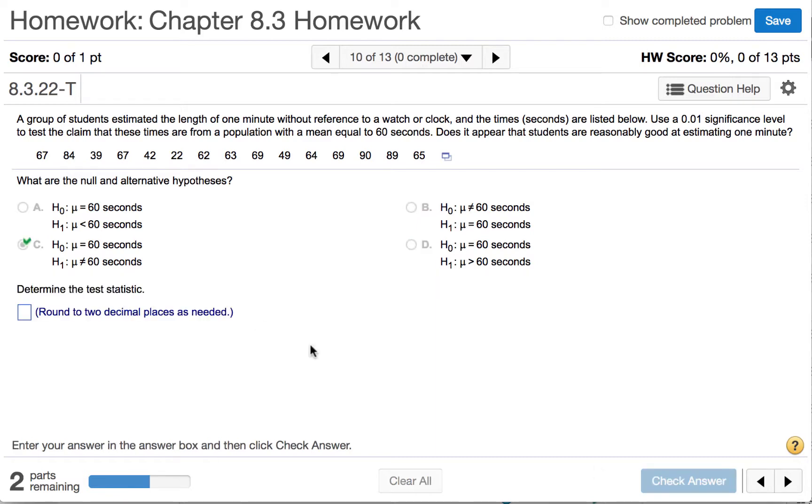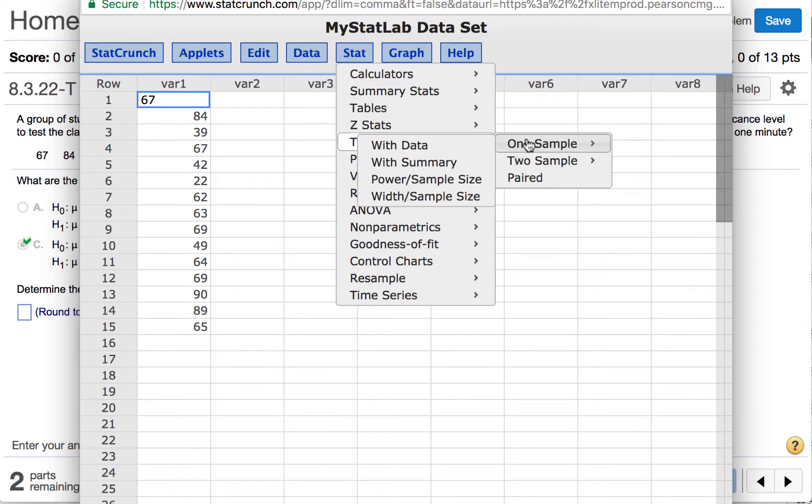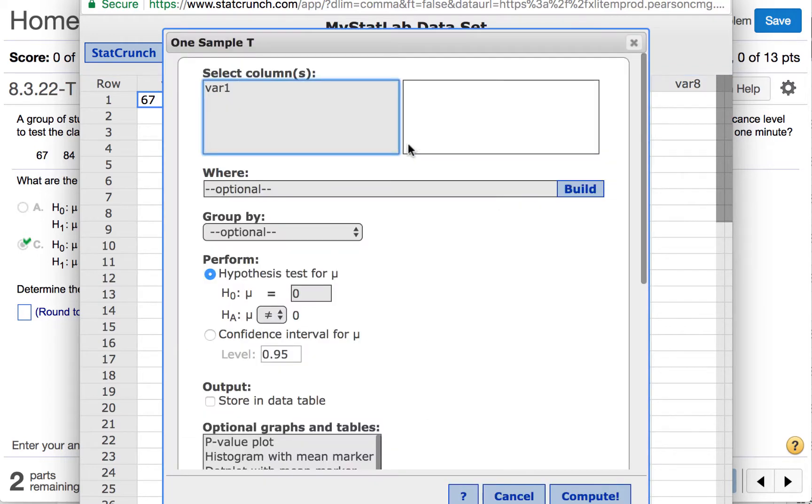We can use StatCrunch to determine the test statistic. We will click the icon and open the data in StatCrunch. We will click Stat, tStats, one sample with data. We will select variable one.